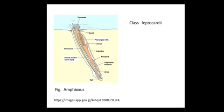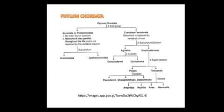The notochord extends from the cephalic portion — that is, the head — to the tail of the body. These are the three main basic features of Chordata: presence of nerve cord, notochord, and gill slits — all three are present in Amphioxus. These are burrowing organisms; the yellowish portion in the diagram shows the sand and the blue portion shows the water or air.